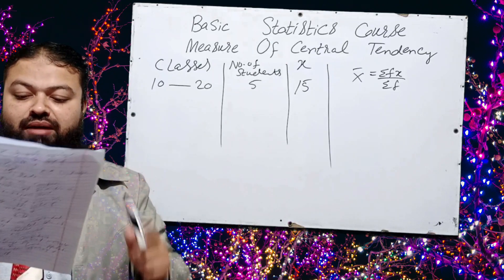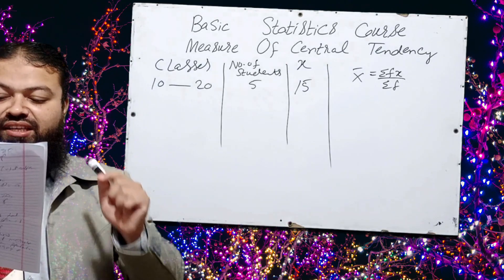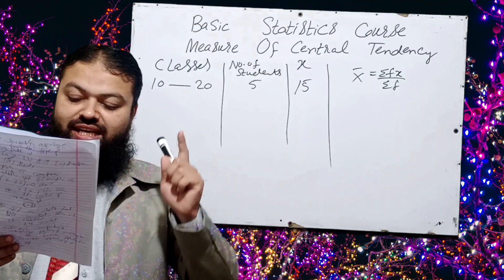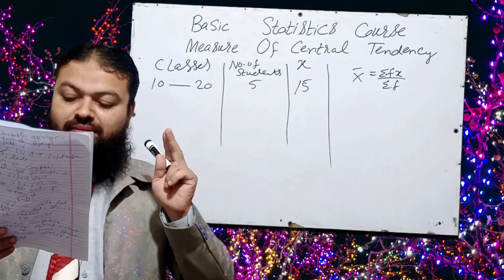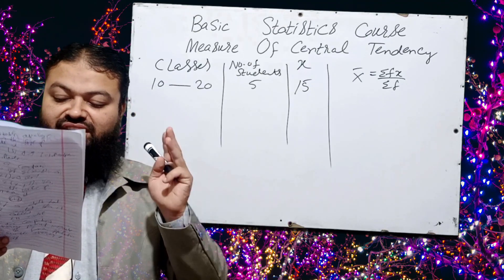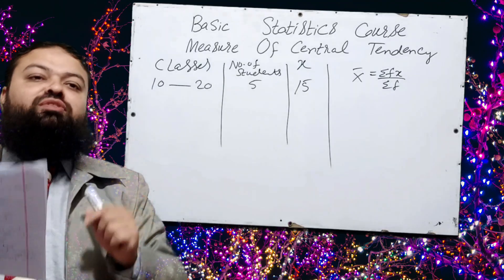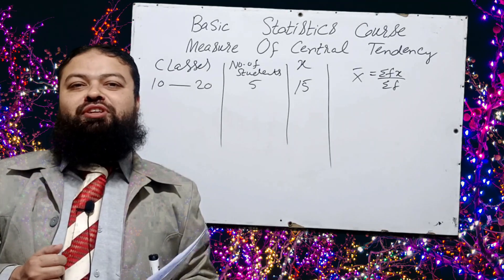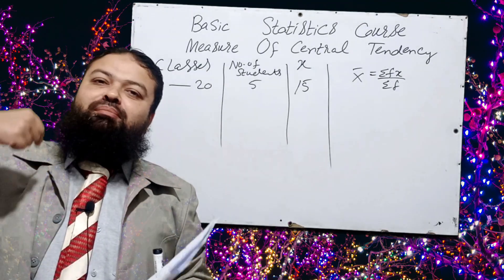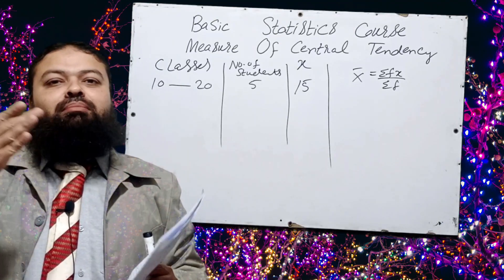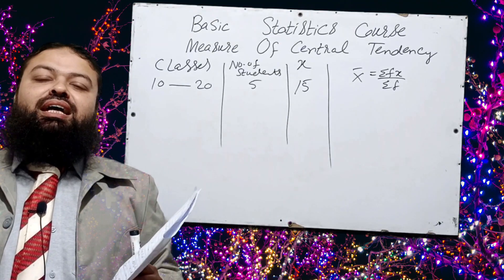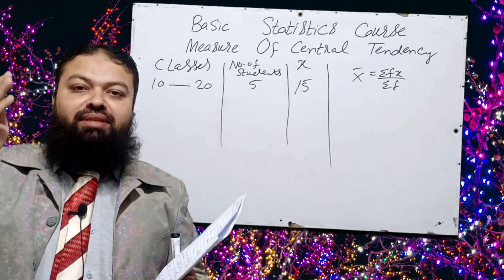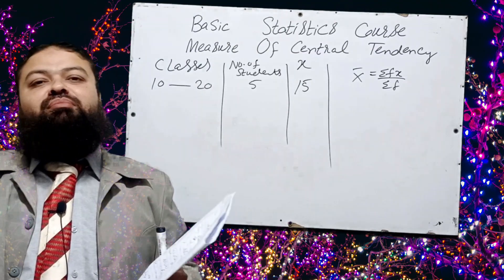Question number two: in a symmetrical distribution with one mode, the highest point on the curve is called — A: mean; B: median; C: mode; D: all of the above. All of the above is the correct option. In a symmetrical distribution, mean, median, and mode are equal, and the highest point on the curve is mean, median, as well as mode.